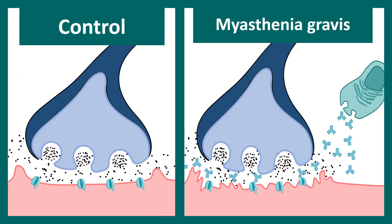In myasthenia gravis, specific plasma cells secrete antibodies against the acetylcholine receptor. First, these antibodies hinder acetylcholine binding to the receptor. Second, the antibodies can fix complement and damage the postsynaptic membrane, leading to inflammation, weaker stimulation of the muscle, muscle fatigue, and other problems.